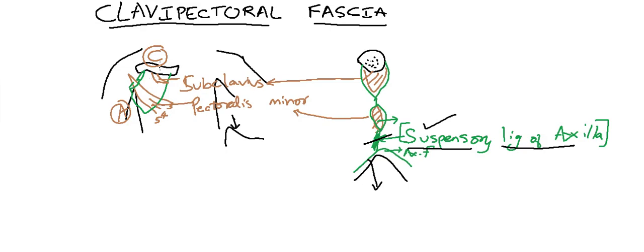So to summarize, the Clavipectoral Fascia is a fibrous sheath superior attached to clavicle, inferior attached to axilla as a suspensory ligament of axilla. It encloses two muscles, subclavius and pectoralis minor. Medially it is continuous with the external intercostal muscle and its fascia, laterally up to the coracoid process. And a modification of this is called the Suspensory ligament of axilla.